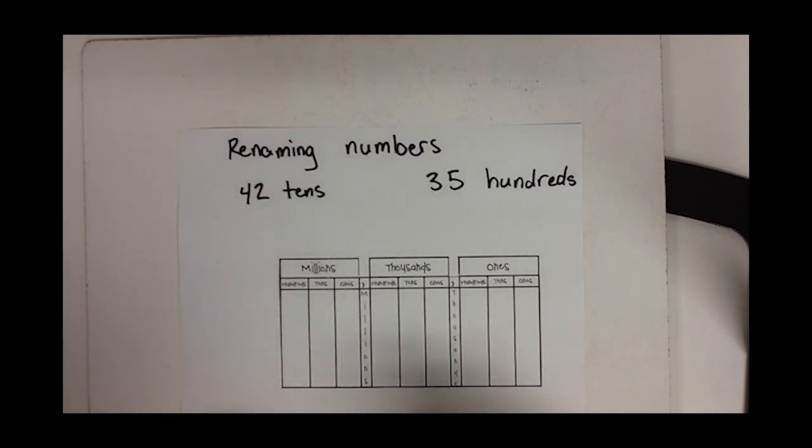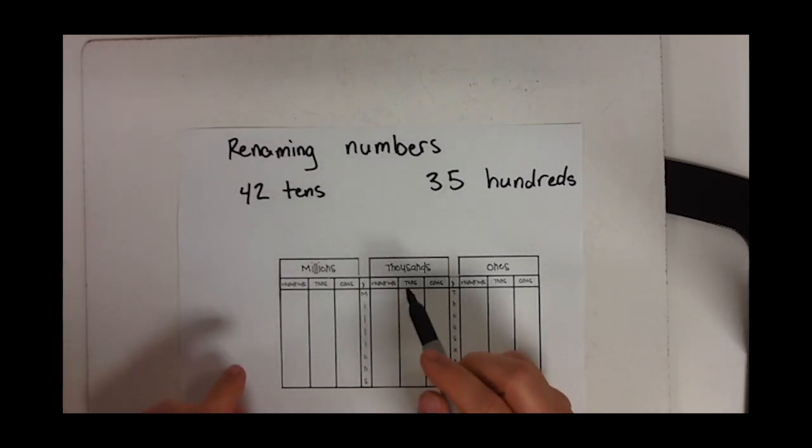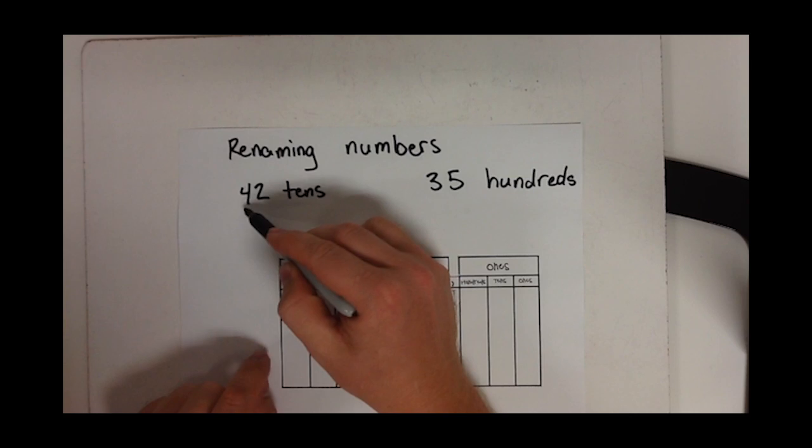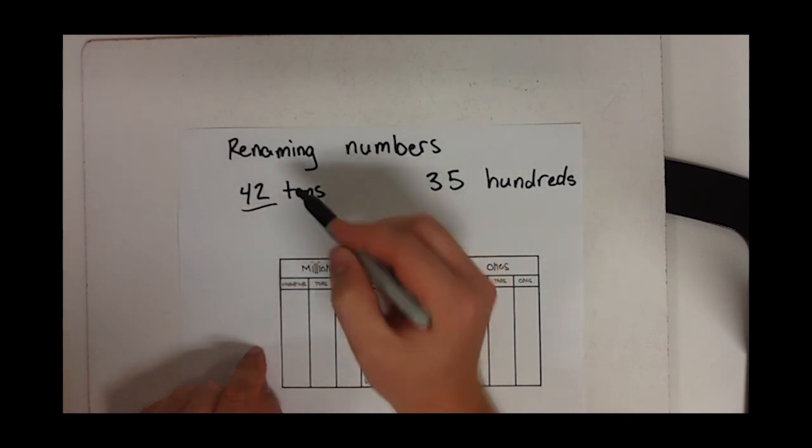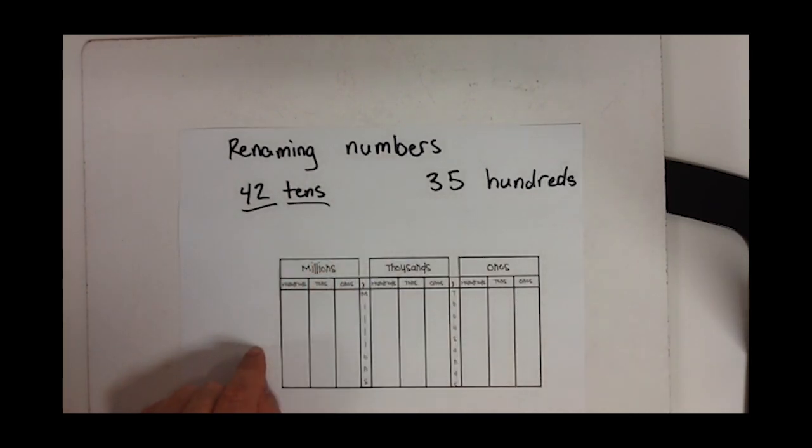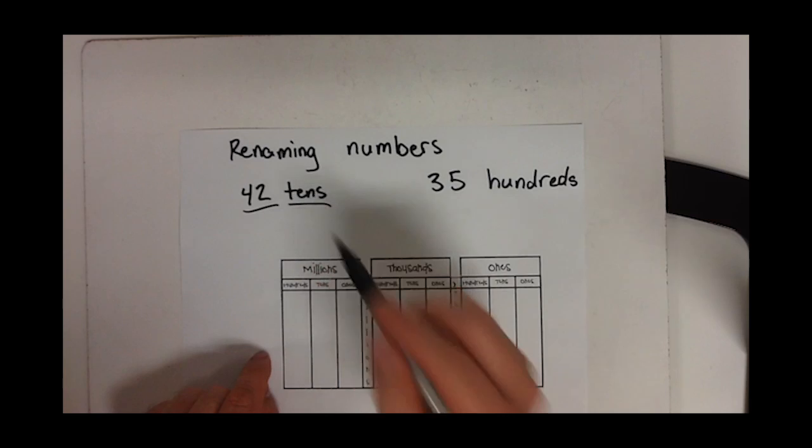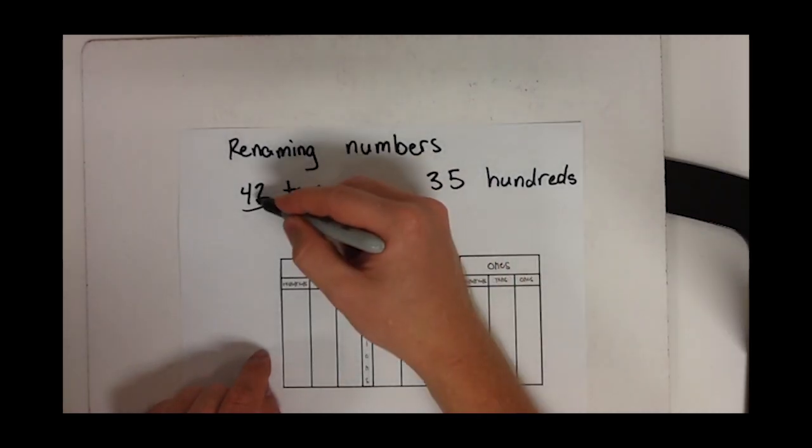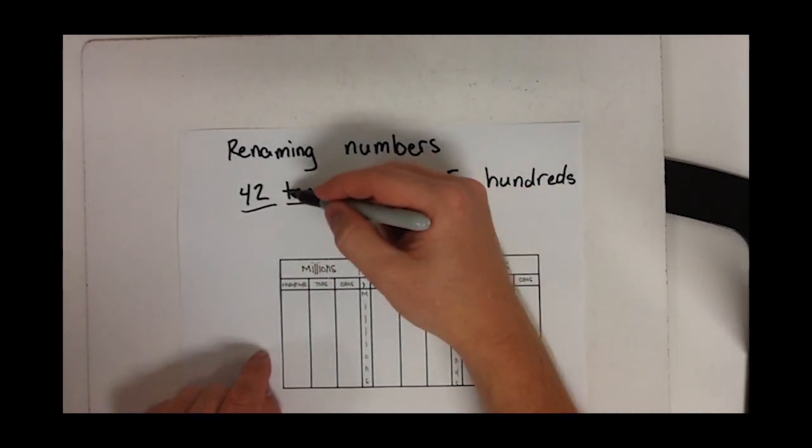The first thing you have to do when you're looking at it is they're going to give you two different things. The first thing they're going to give you is the number, which is 42, and then they're going to give you the place value, which is tens in this case. So we have to take 42 and put it in the tens place.